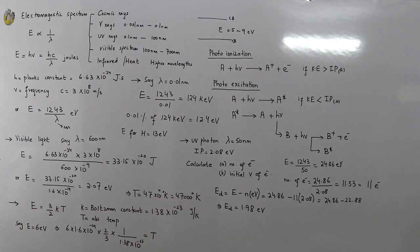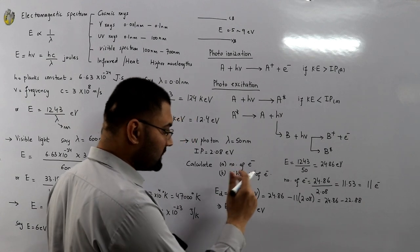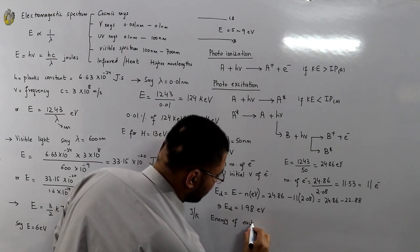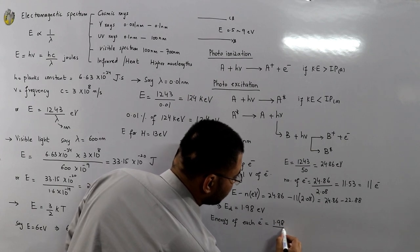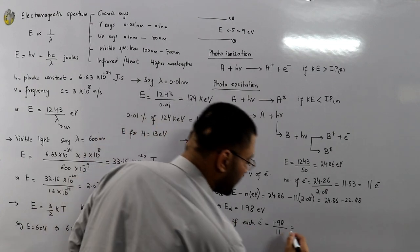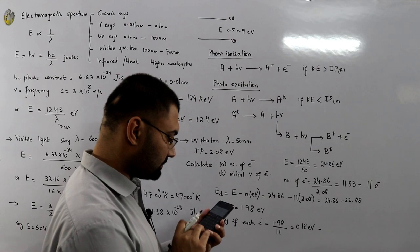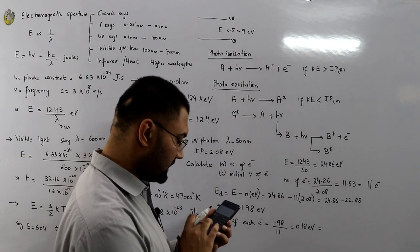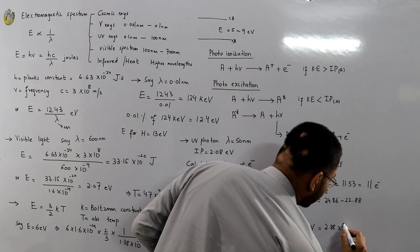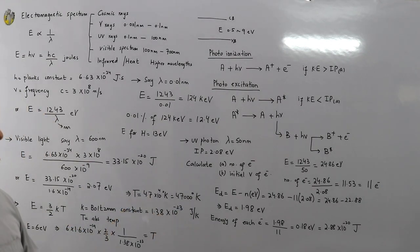This 1.98 eV energy difference has to be distributed among all 11 electrons. So the energy of each electron is 1.98 / 11 = 0.18 electron volts. Multiply by 1.6 × 10⁻¹⁹ to convert to joules: that gives 2.88 × 10⁻²⁰ joules.